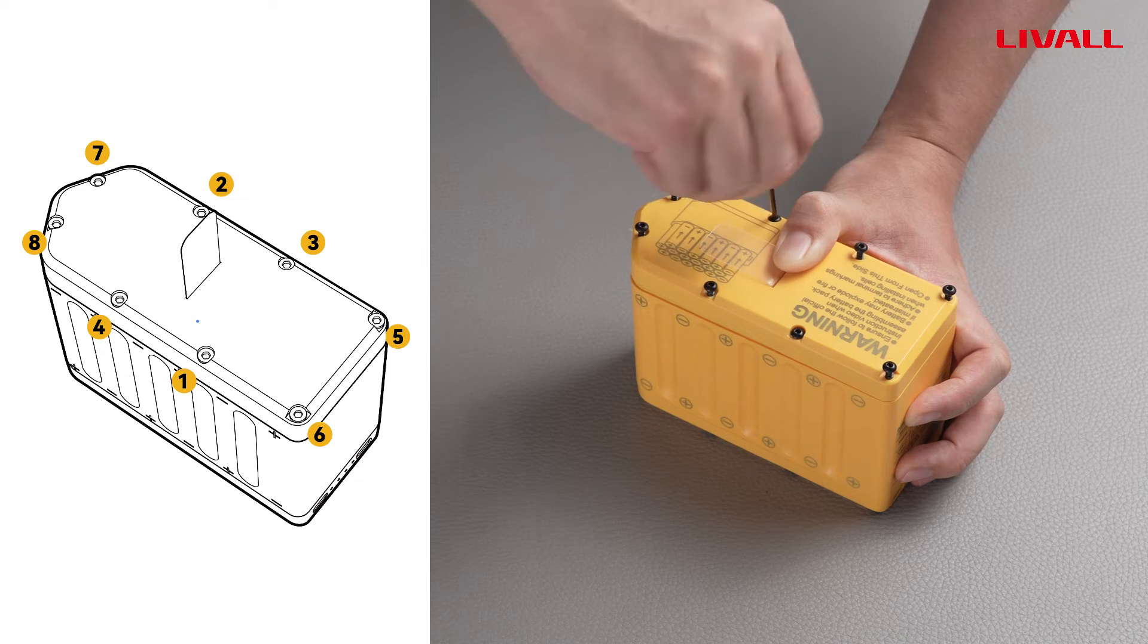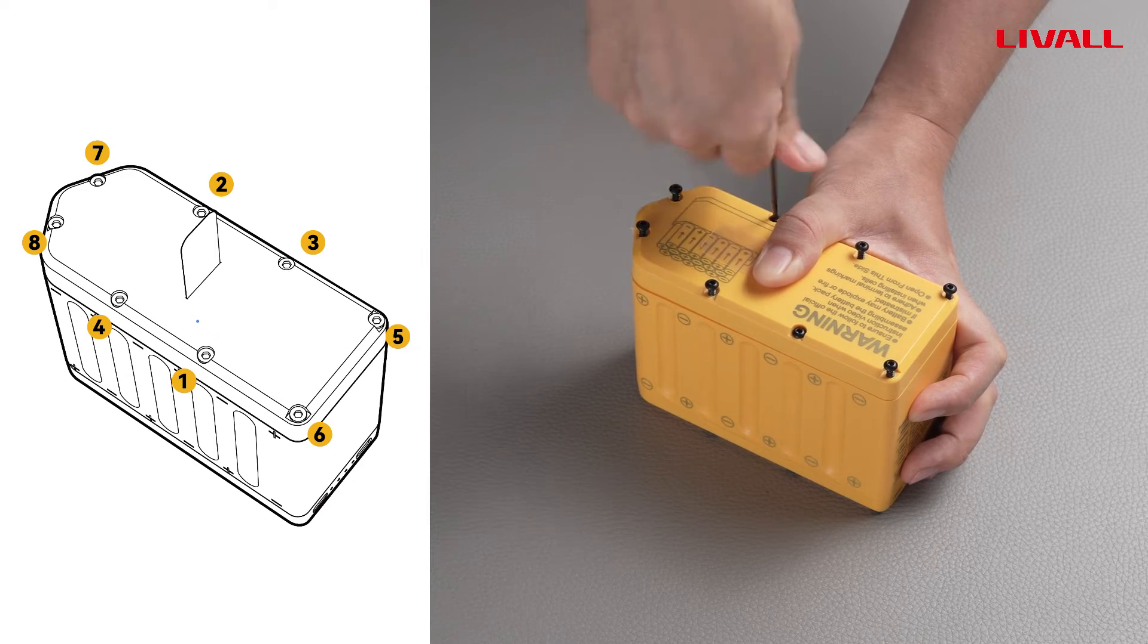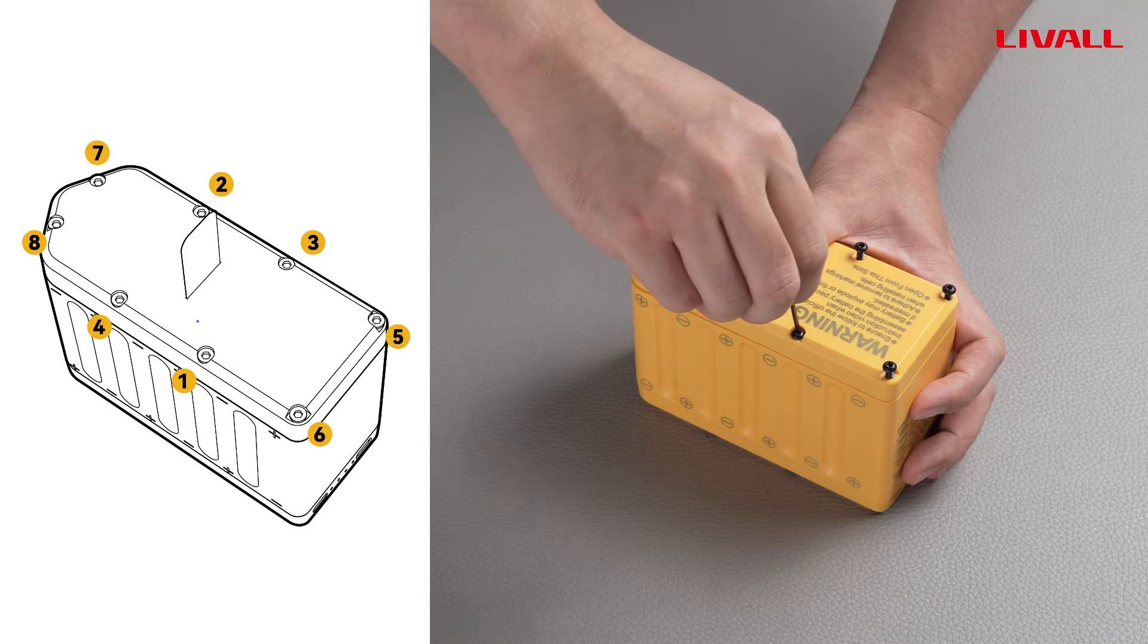Twist screw 1 for about one round, then turn screw 2 one round, and then screw 1, screw 2 alternately until both screws are tightened.